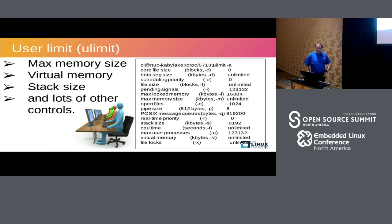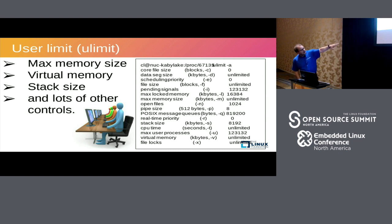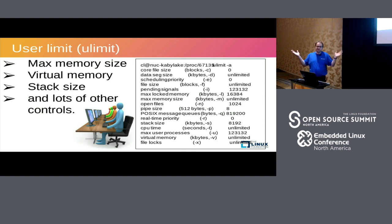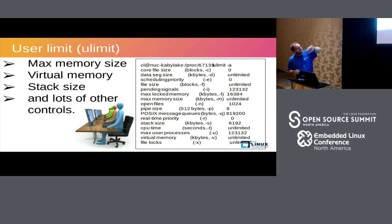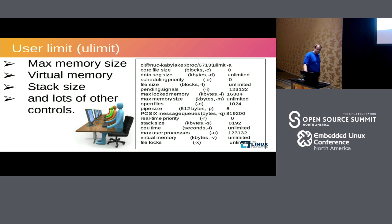There's an important tool called ulimit that allows you to specify limits on the amount of memory a process can use. You can specify how much virtual memory a process can use — here it says unlimited, but you can limit it. You can set the max memory size, limit the amount of locked memory, change scheduling characteristics, the amount of CPU time it can use, and more. This gives you detailed control over resource limits of a process, so a process doesn't hog all memory or all CPU time.